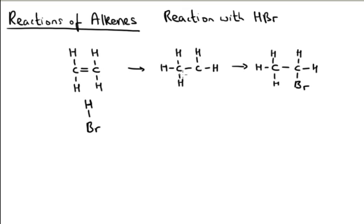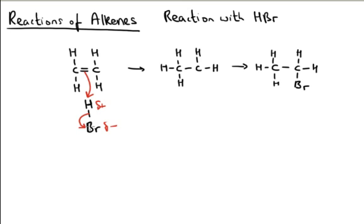So a reaction with ethene and HBr — here's the electron-rich double bond. Positive chemicals are going to be attracted towards this electron-rich double bond region, and so in this case it's going to be the delta plus H. This is a polar bond because the bromine is more electronegative than the hydrogen, so this is delta plus and this is delta minus. The curly arrow will move from the hydrogen to the bromine — remember that's a movement of a pair of electrons — and then the bond between the H and the bromine will move towards the bromine, again that pair of electrons moving towards that bromine atom.